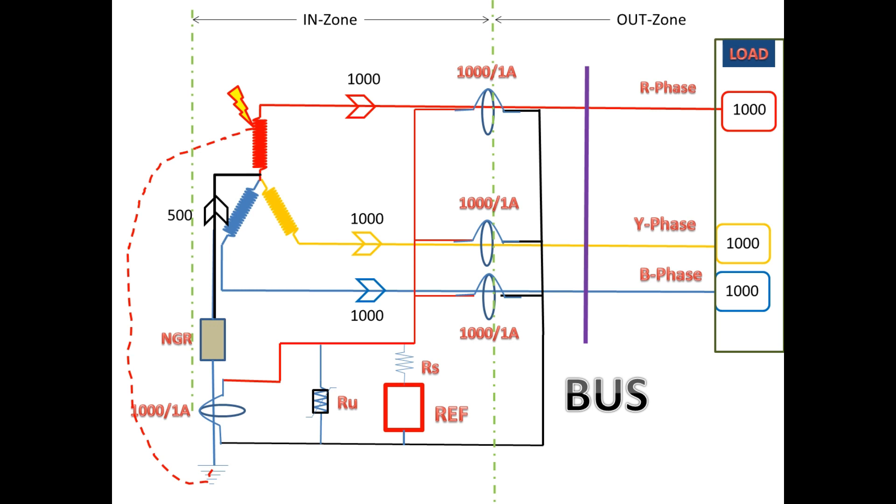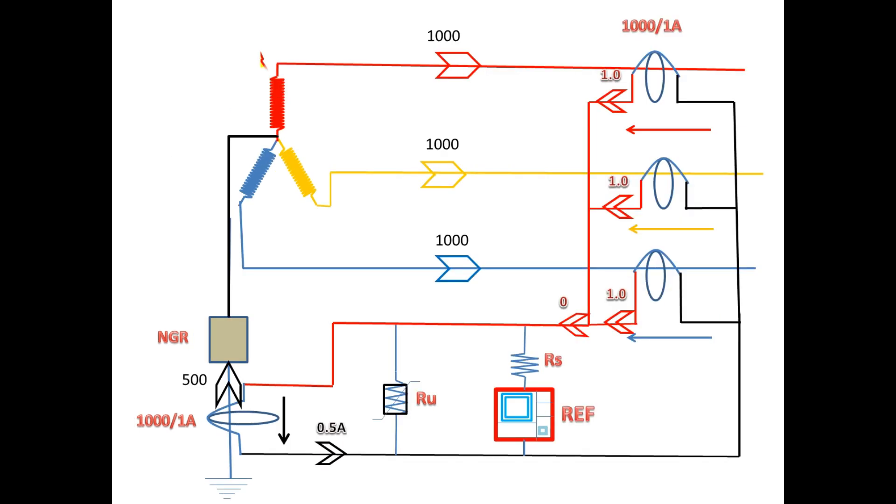This fault current can only be sensed by the neutral CT. This current will not be sensed in the core balance CT. So IB is 0 in the REF circuit since all three phases have equal current magnitude. And I0 gets 0.5 amps according to the CT ratio.